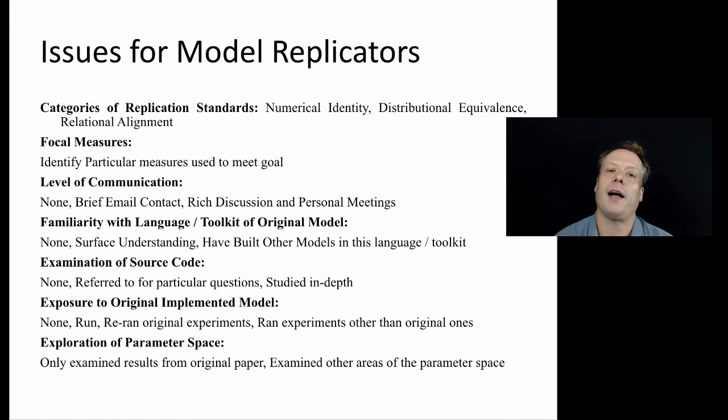They should also identify the focal measures. What are the measures that they're going to use to show that they've replicated the original results? Are they going to use, for instance, in the diffusion model, the diffusion curve over time?